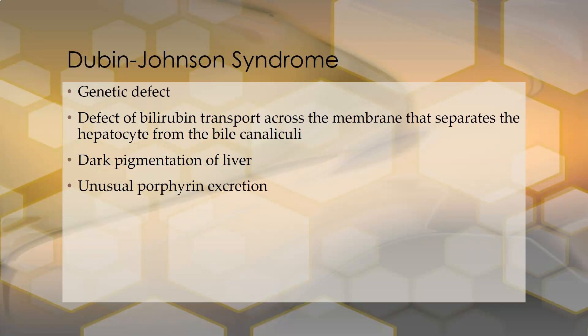Dubin-Johnson syndrome is another genetic defect — a defect of bilirubin transport across the membrane that separates the hepatocytes from the bile canaliculi, so bilirubin cannot be offloaded into the disposal system. You will see dark pigmentation of the liver and an unusual porphyrin excretion pattern. And that is the last of our liver diseases.